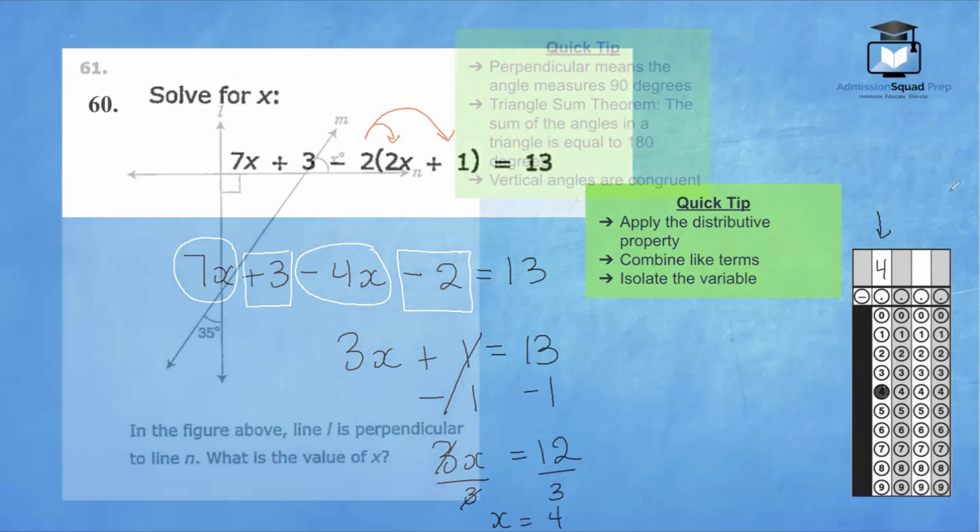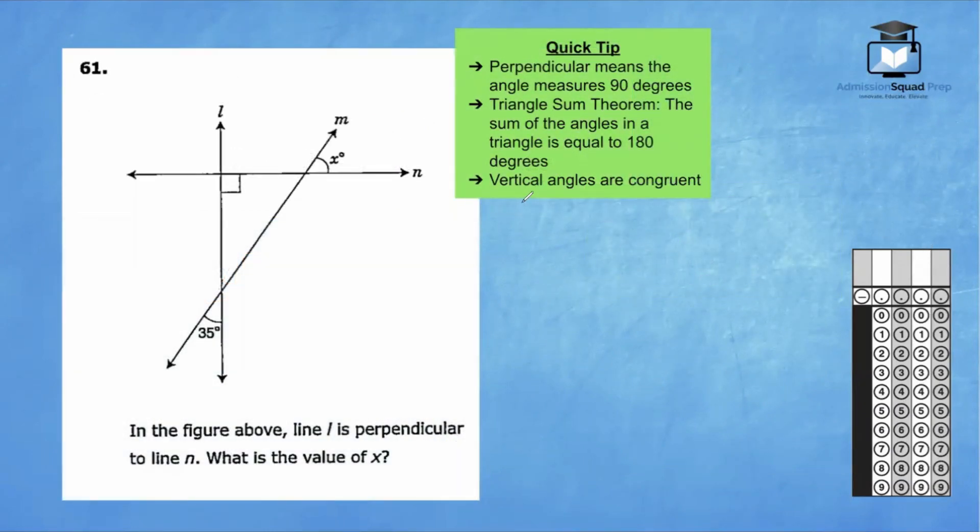For 61, this problem is testing your understanding of angle relationships. There are a few things I would like you to know before solving this problem. As I'm reading the question, it says in the figure above, line L is perpendicular to line N. What is the value of x? So it's very important that you understand what the word perpendicular means. So I have a couple notes here for you.